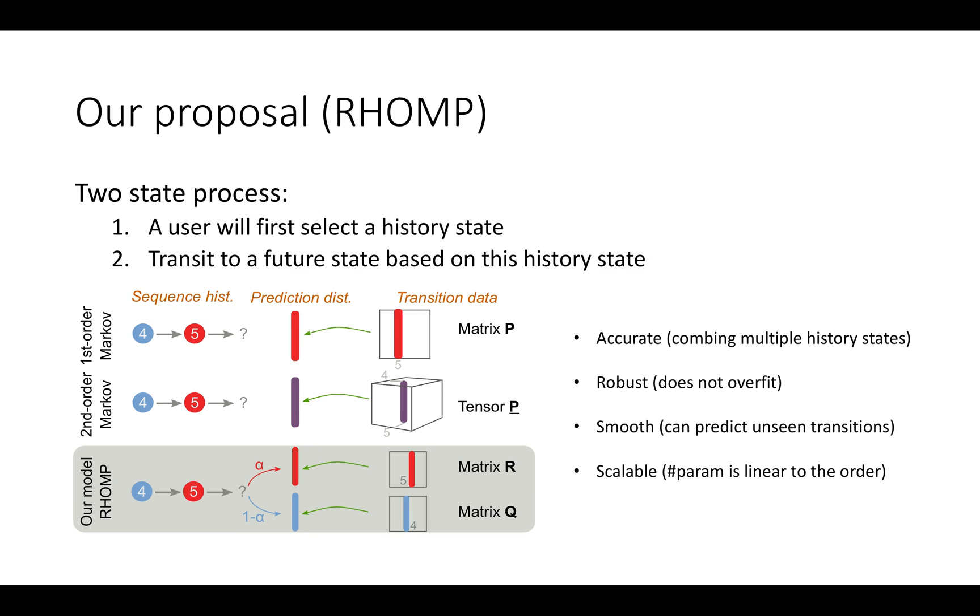Our proposed method is called RHOMP. We summarize it as a two-state process. A user will first select a history state, then transitions to a future state based on this history state following Markov rules. We find this model is able to improve the accuracy without risking overfitting the data, and it is also scalable as the total number of parameters only grow linear to the order of the model.